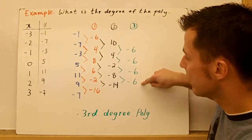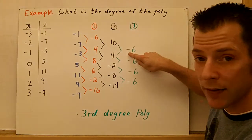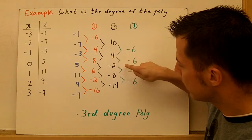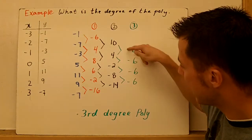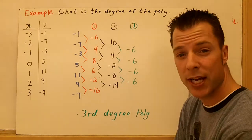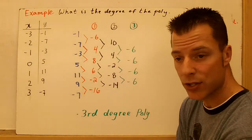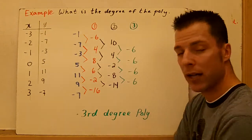So, in green, I have the differences. 4 minus 10, -6. -2 minus 4, -6. And you can see that now all my differences are the same on the third difference. So, this would be a third degree polynomial. And that's how you use finite differences from a table to know what the polynomial's degree is going to be.